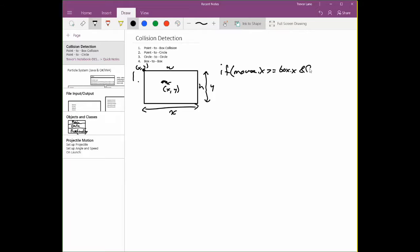And the mouse dot x is less than or equal to the box dot x plus the box dot width. So basically the box dot x is here. If we add on the width, we're on the right side of the box. Perfect.